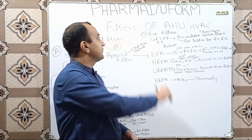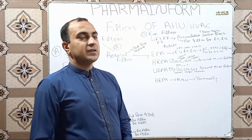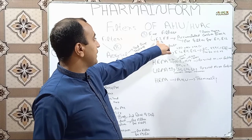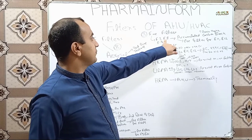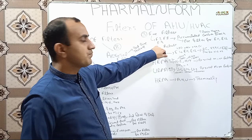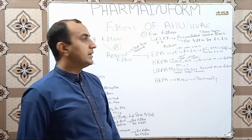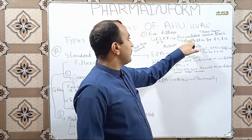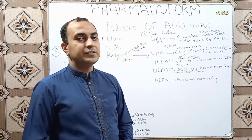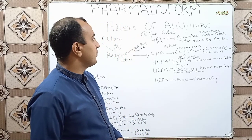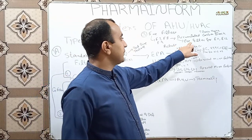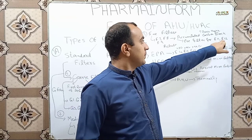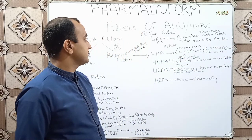The next class is fine filters. Fine filters are further divided into F7, F8, and F9 filters. These are used to remove accumulated carbon black particles and tobacco smoke, and are also used as pre-filters for E11 and E12 filters.